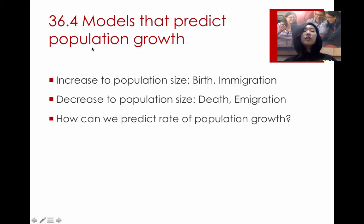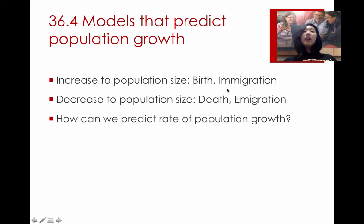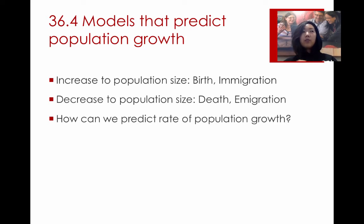We can use different models to predict the growth of populations. Increase in population size is due both to birth and also to immigration — because we're looking at a population within a specific area, if members of the same species enter that area, we consider that a growth in population size. Conversely, decrease in population size is either due to death or emigration, so if species leave or die off in that area, that's a decrease in size.